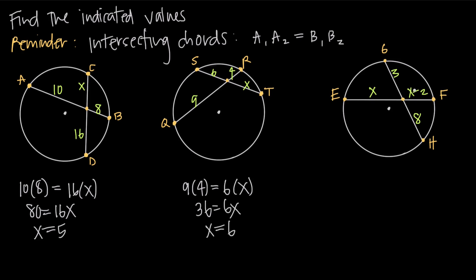And we can even do this when we have multiple unknown lengths. We just take the two lengths from chords EF. So x and x minus 2. So we'll get x times x minus 2. Multiply those together. Set that equal to the product of the lengths from the other chords. So 3 and 8. So I get 3 times 8.